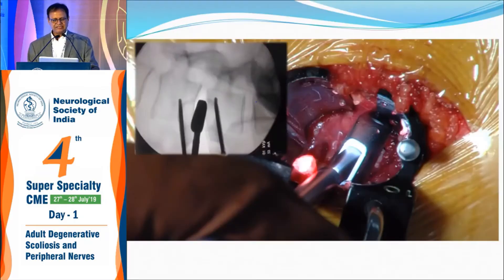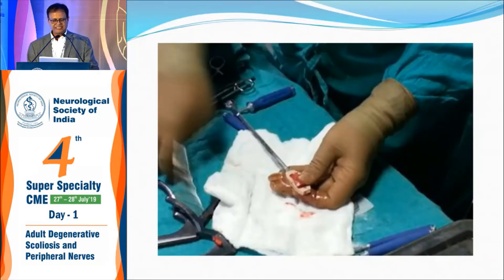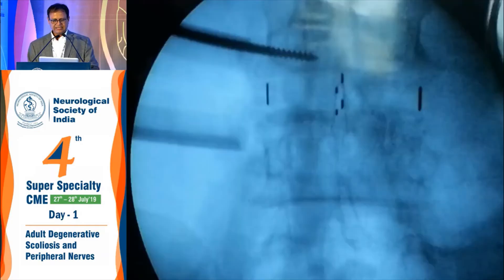Use a sizer to decide the proper cage size, checking both AP and lateral views to decide height and length. The sizer has to go from one pedicle to the other pedicle. The correct size of graft is then decided and filled with either autologous or artificial bone graft. After final placement, the cage goes from one pedicle to the other with correction of the scoliosis.